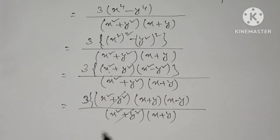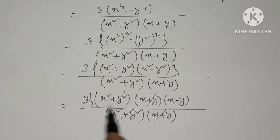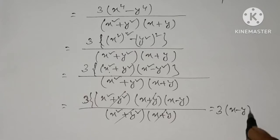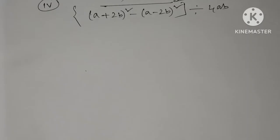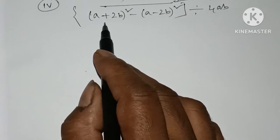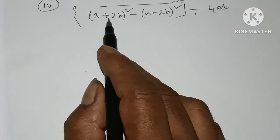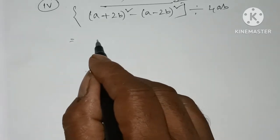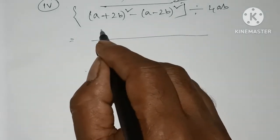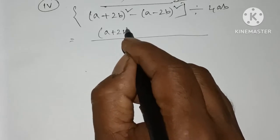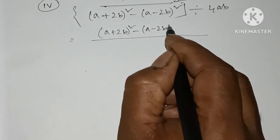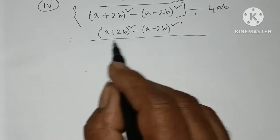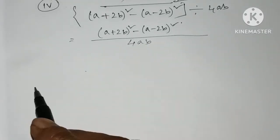This is a common problem. Here we have 3x minus y, so 3x minus y. A plus B all square minus A minus 2B all square — I will tell you A plus B all square minus A minus 2B all square.